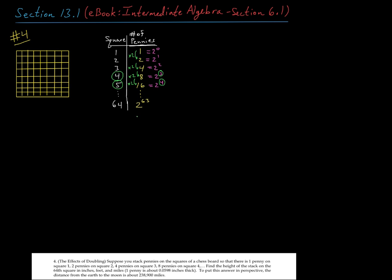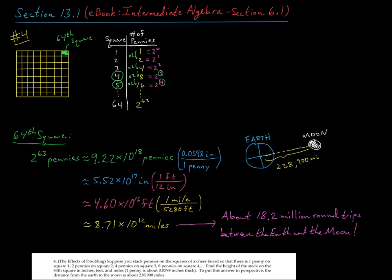Okay, so you can use your calculator and just compute what two to the 63rd is. And it turns out to be a rather big number. I've just done the calculations here. So on our 64th square, we'll have two to the 63rd pennies, which is about 9.22 times 10 to the 18th. So that means take this decimal place and move it to the right 18 spots. Put another way, that's about 9.22 billion billion pennies. Okay, that's a lot of pennies.